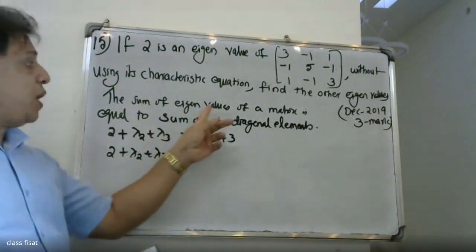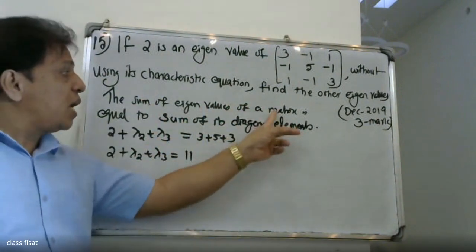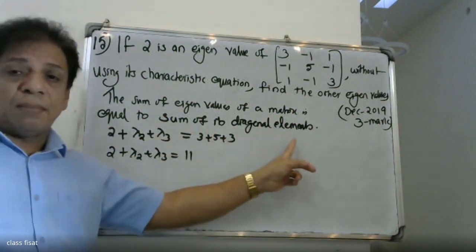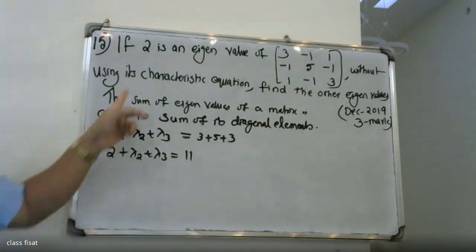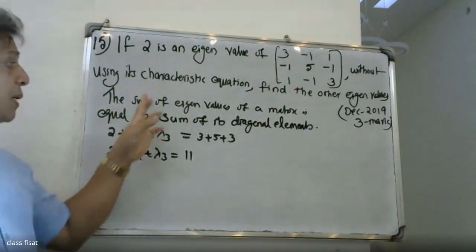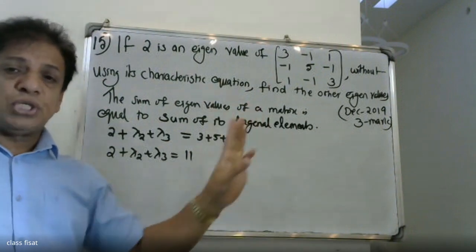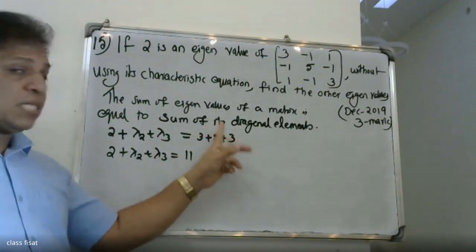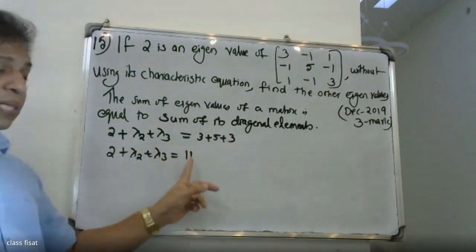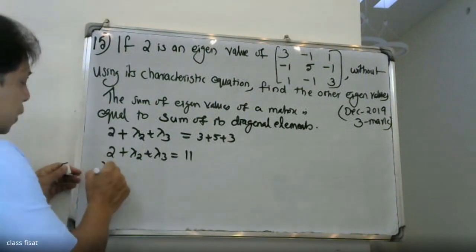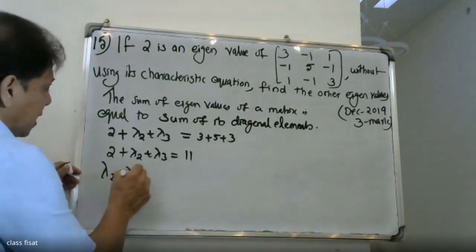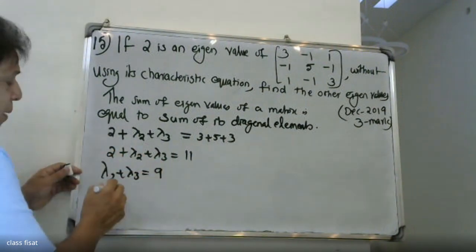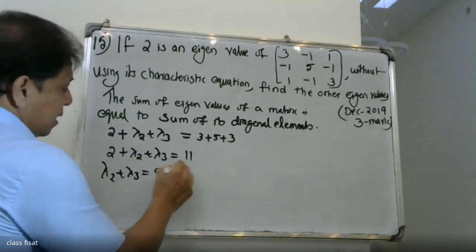The sum of eigenvalues equals the sum of its principal diagonal elements. So 2 plus λ2 plus λ3 equals 9, which gives us λ2 plus λ3 equals 9. This is our first equation.